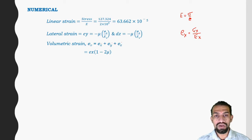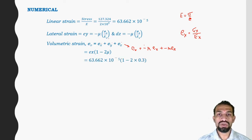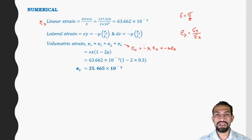Volumetric strain = Ex + (−μ · Ex) + (−μ · Ex) = Ex(1 − 2μ). Substituting the known values of μ and Ex, volumetric strain = 25.465 × 10⁻⁵ (dimensionless).